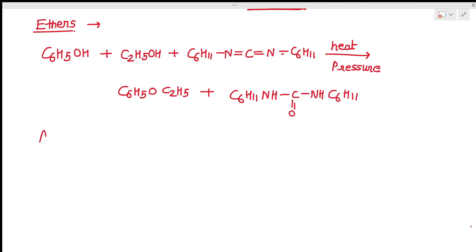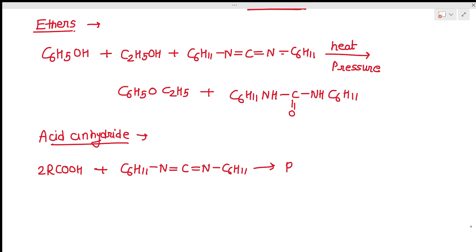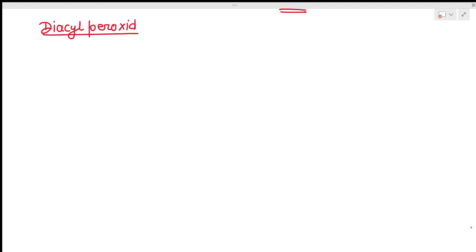We can also prepare acid anhydrides with the help of DCC. For this we take the acid and DCC, and we obtain (R-CO)2O (acid anhydride) plus C6H11-NH-C(=O)-NH-C6H11 (dicyclohexylurea).